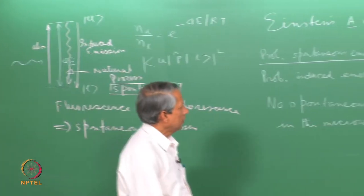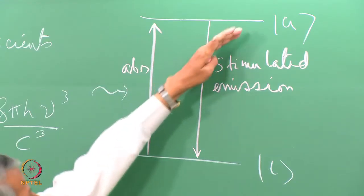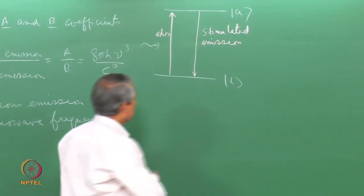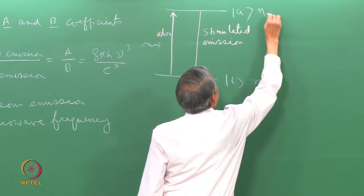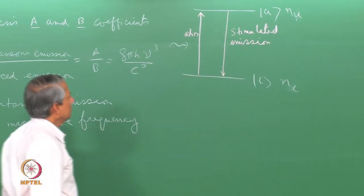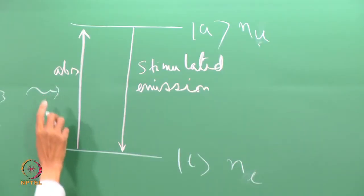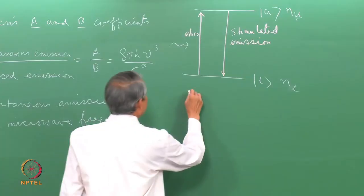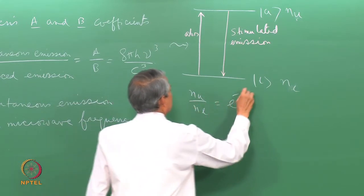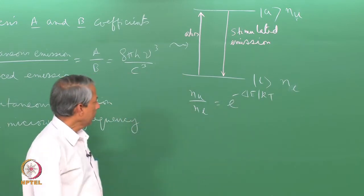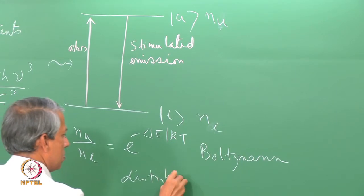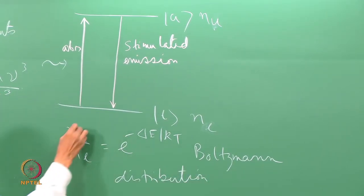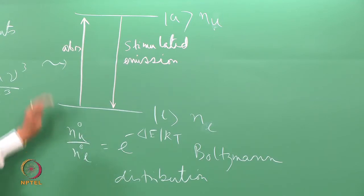Let us imagine what happens now. Before the radiation was applied, the number of particles in the lower and upper levels followed the Boltzmann distribution. Let us call N-upper and N-lower the populations. If there is no radiation present, then N-upper divided by N-lower equals the Boltzmann factor e to the minus delta-E over kT. Let us put a superscript zero to indicate what happens when nothing else is disturbing the system — that is the thermal equilibrium distribution.